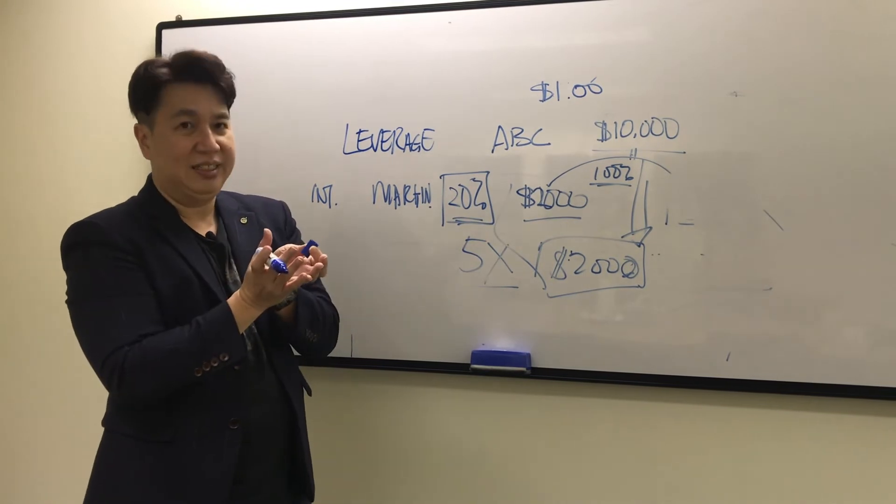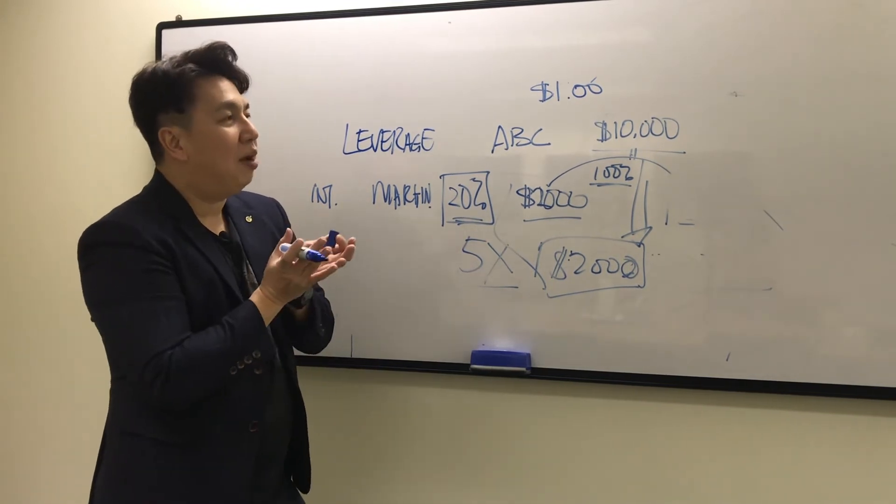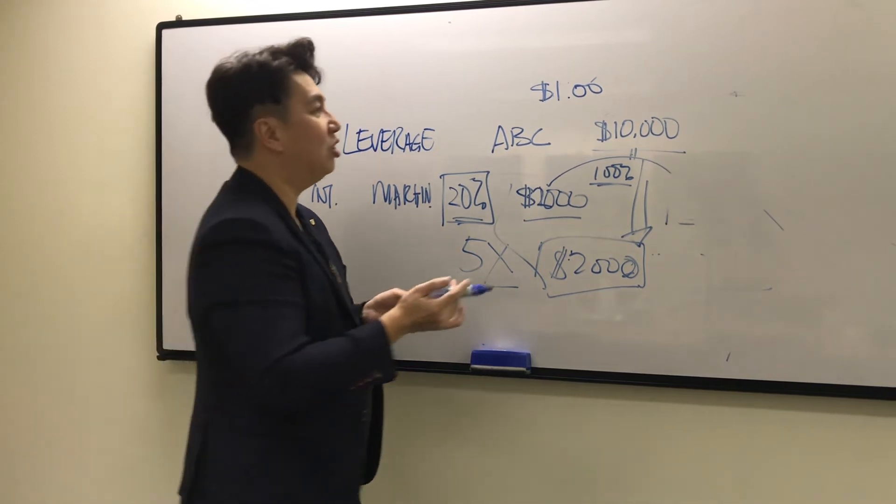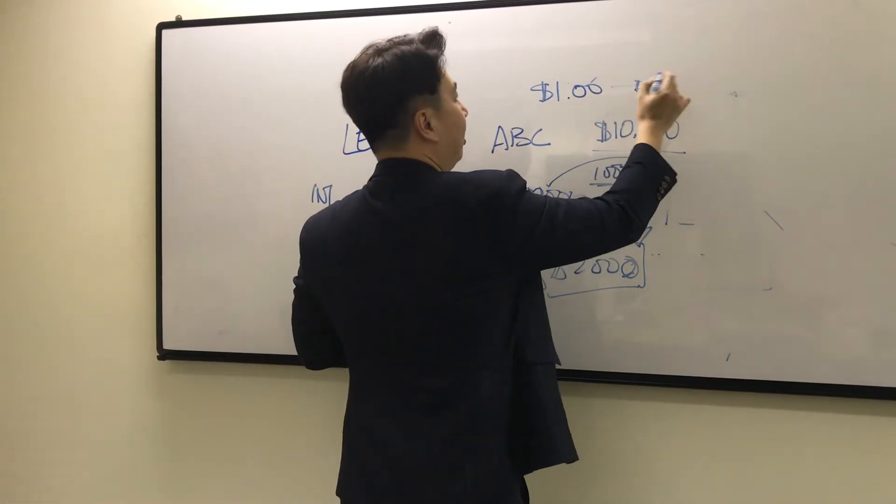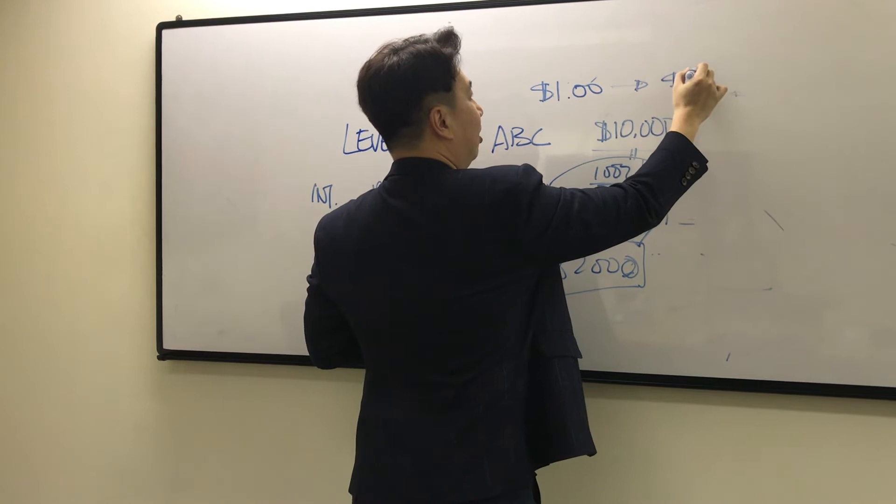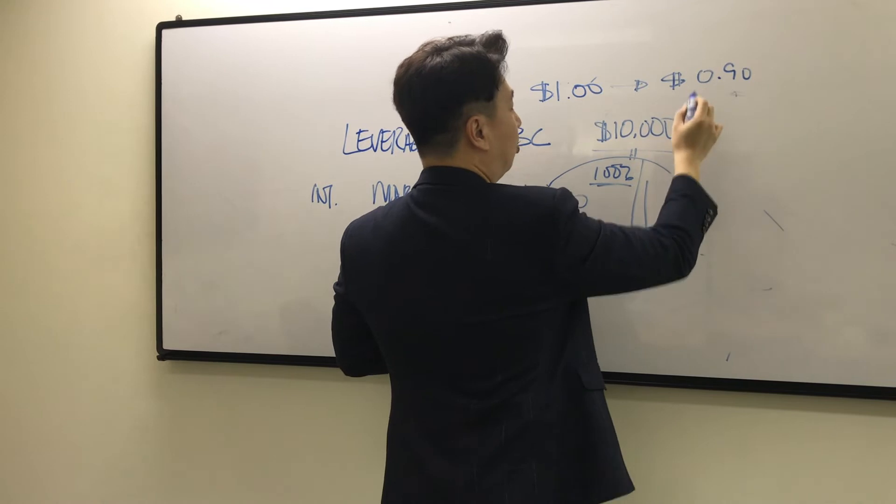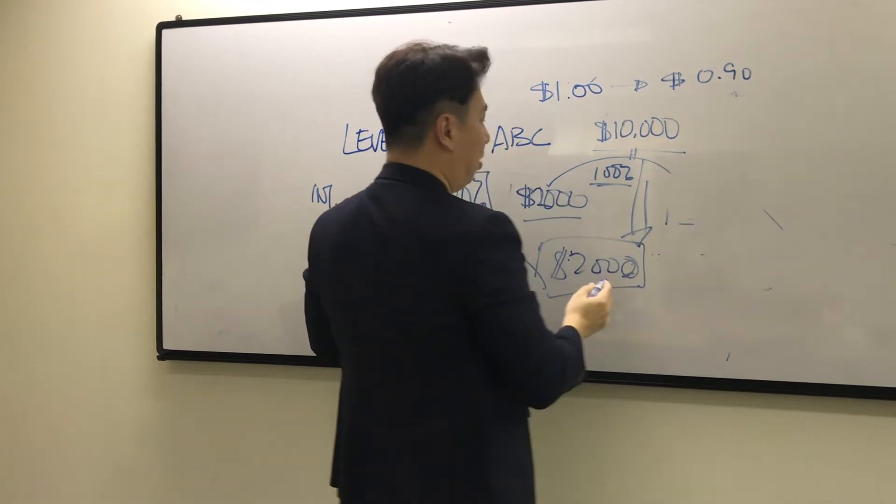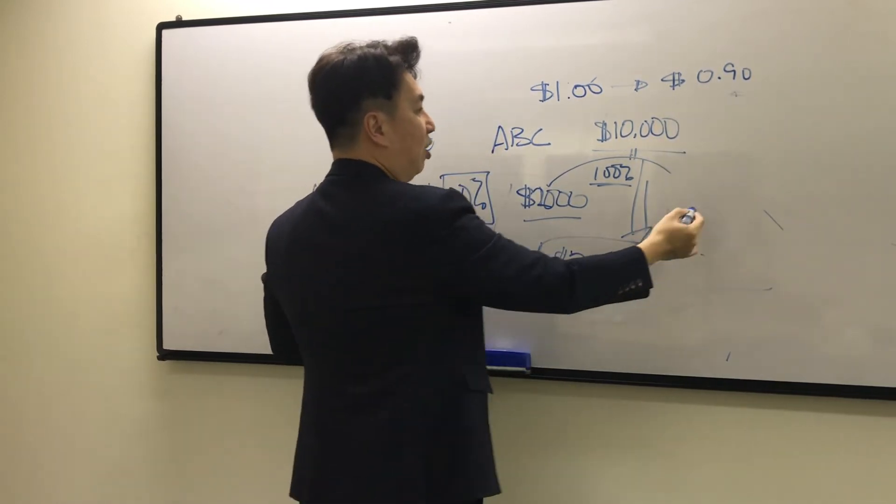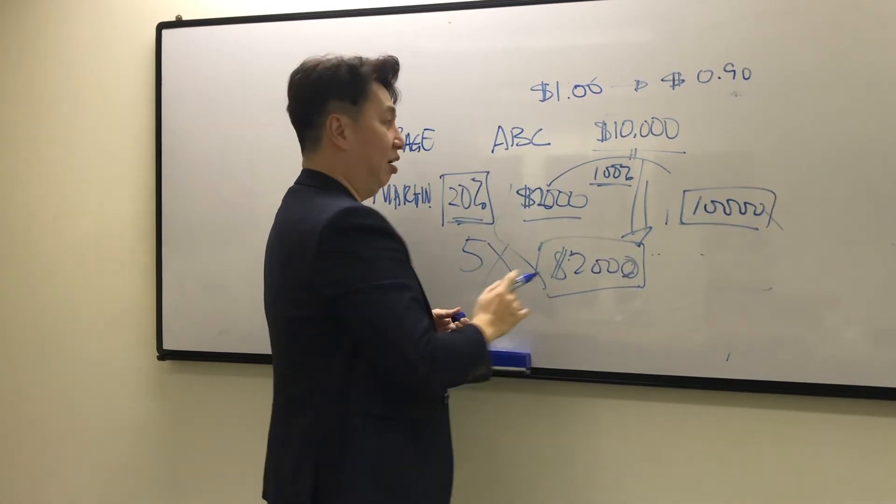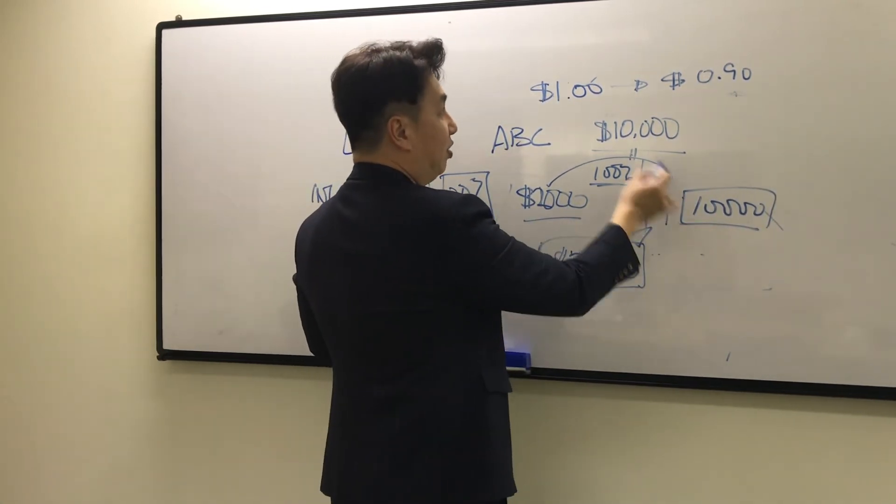What will happen if the price drops? If the price drops from $1 to $0.90, your loss will be $1,000. Why is it $1,000? Because you bought $10,000 worth of this share at $1.